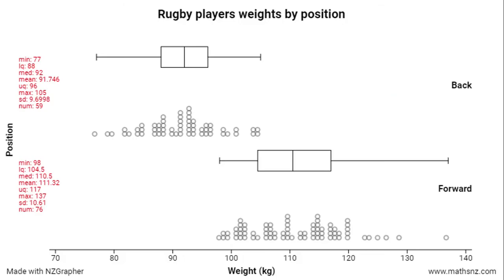So let's have a look at our rugby players. If I take the width of those two boxes — you can see the red arrows I've just added — I'm looking at how spread out the interquartile range of our backs is compared to the interquartile range of our forwards. You can see that the width of the forwards' box is wider than the width of the backs'. So that tells us that the middle 50% of the forward weight is a little more spread out — there's more variation there.